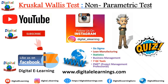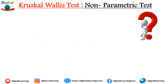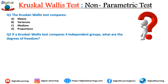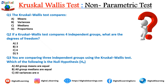Now it's quiz time. Leave your answers in the comments below. Question 1: The Kruskal-Wallis test compares what — mean, variance, median, or proportions? Question 2: If a Kruskal-Wallis test compares 4 independent groups, what are the degrees of freedom? A) 2, B) 3, C) 4, D) 5. Question 3: You are comparing 3 independent groups using the Kruskal-Wallis test. Which is the null hypothesis? A) All group means are equal, B) All group medians are equal, C) All variances are equal, D) At least one mean differs.